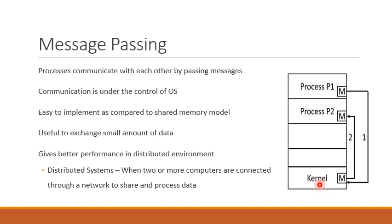Every message exchanged between processes is transferred with the help of the kernel. First, the message is transferred to the kernel, and then the kernel forwards it to the concerned process. Message passing scheme is easy to implement compared to the shared memory model. In the shared memory model, a region of main memory is shared between the processes that wish to exchange information, whereas in message passing, no such region is shared between the processes. Instead, processes communicate indirectly with the help of the operating system.